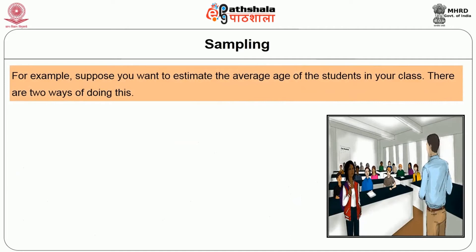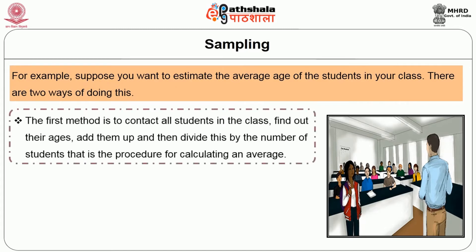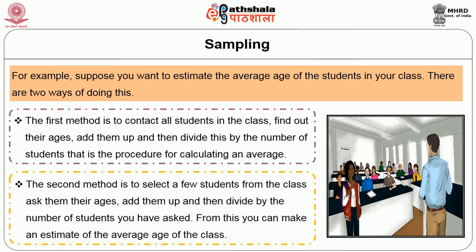For example, suppose you want to estimate the average age of students in your class. The first method is to contact all students in the class, find out their ages, add them up, and divide by the number of students. The second method is to select a few students, ask their ages, add them up, and divide by the number of students asked — from this you can estimate the average age of the class.